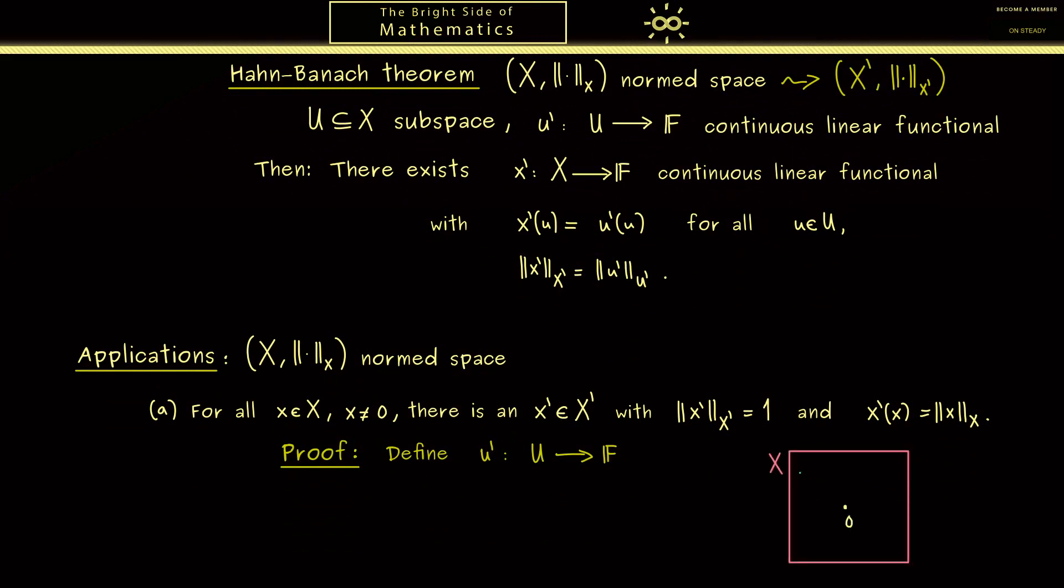In other words, if this is the vector space X and here we have the vector x, then the only meaningful choice for U would be the one dimensional subspace that is spanned by x. In other words we can just scale the vector x with all numbers from F.